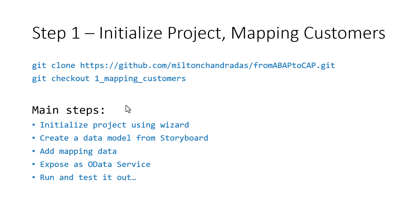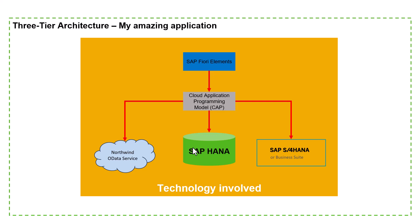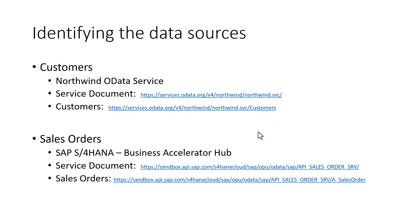If we further subdivide step one into smaller steps, we are planning to initialize the project using the wizard, then create a data model, and so on. We have three different data sources in the persistence layer. But before we delve into step one, let's identify the data sources themselves.